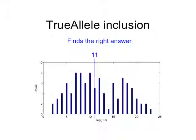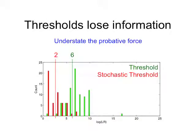What is an inclusion? An inclusion is nothing more than a positive amount of information — an exponent greater than zero. If it's a six, that indicates support for an inclusion; that's a million. If it's 12, it's like a trillion. We've done validation studies where TrueAllele finds the correct answer. From 100 casework samples, on average it gets an 11 — 100 billion — as the average. On the same data, you see how thresholds lose information.